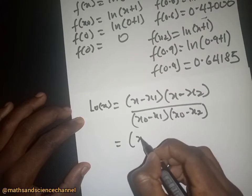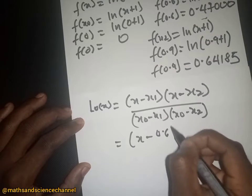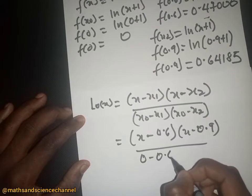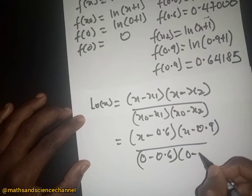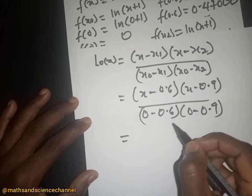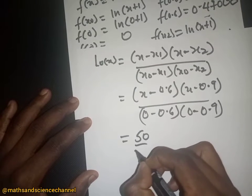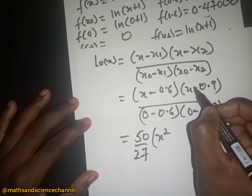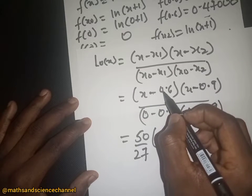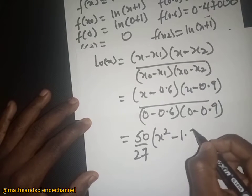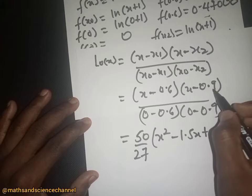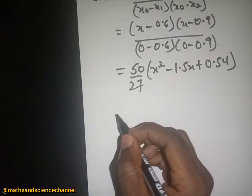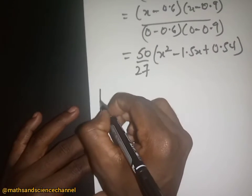Substituting the values — s₁ = 0.6, s₂ = 0.9, s₀ = 0 — into L₀(x): numerator is (x − 0.6)(x − 0.9), denominator is (0 − 0.6)(0 − 0.9). Computing gives a coefficient of 50/27, and expanding the numerator yields x² − 1.5x + 0.54. So L₀(x) = (50/27)(x² − 1.5x + 0.54).